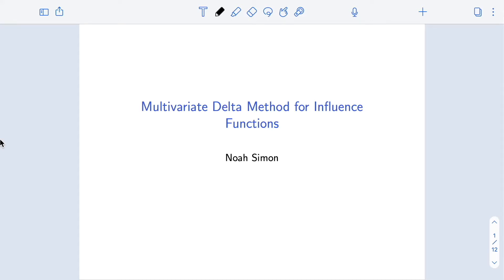We're now going to engage further with the asymptotic behavior of slightly more complex estimators that combine simpler estimators. We're going to do this using the multivariate delta method, and in particular the multivariate delta method for influence functions in asymptotically linear estimators.